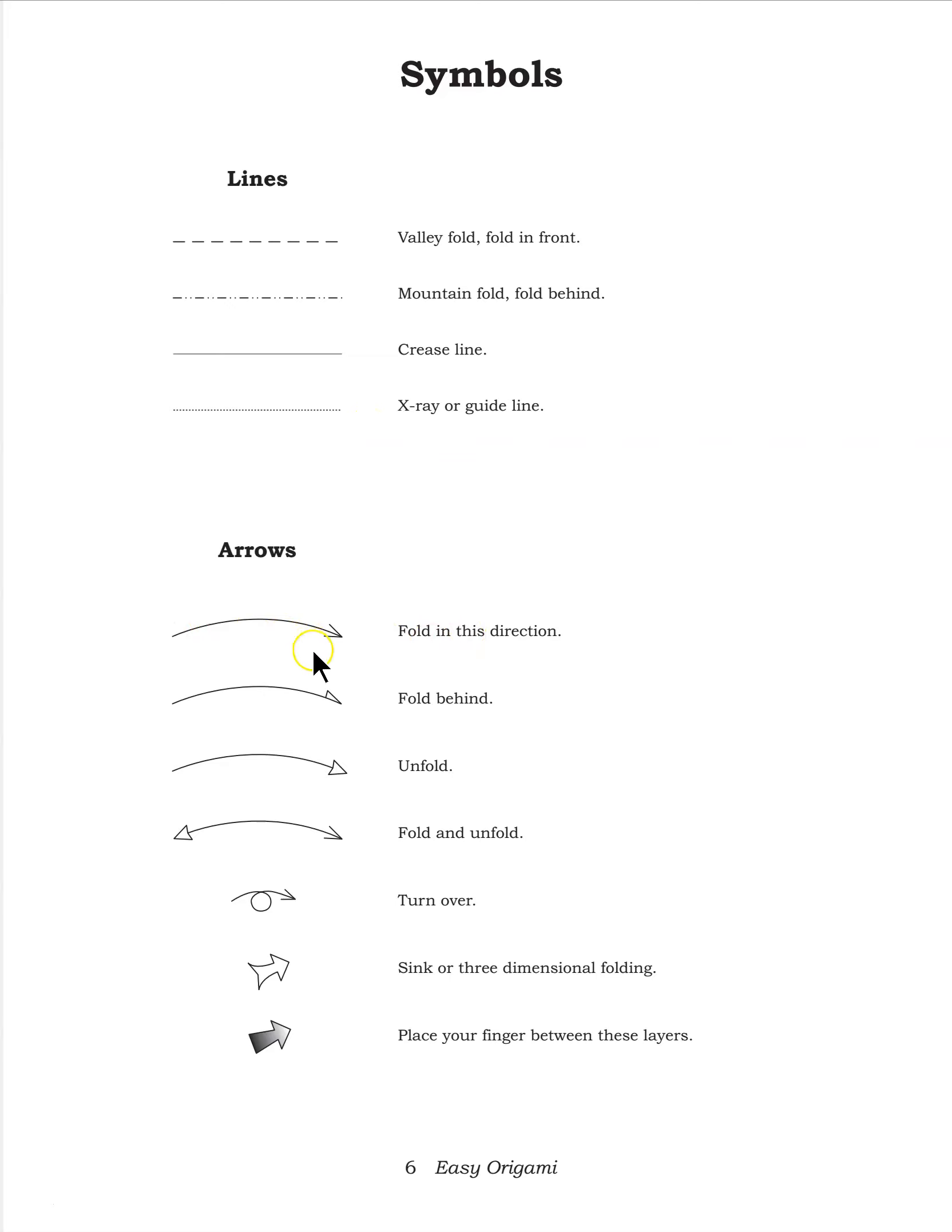Okay, and then this is telling you to fold in this direction, fold behind, unfold it. So notice the differences in the arrows. If it has this arrow, fold it that way. And if it's this one, it's unfolded. This is fold and unfold. Turn over, sync or three-dimensional folding, so that's kind of hard for me to explain. And then put your finger between the layers. So on some of the more complicated projects you might want to come back to this page to make sure you're understanding what the instruction is given, what the symbol means.